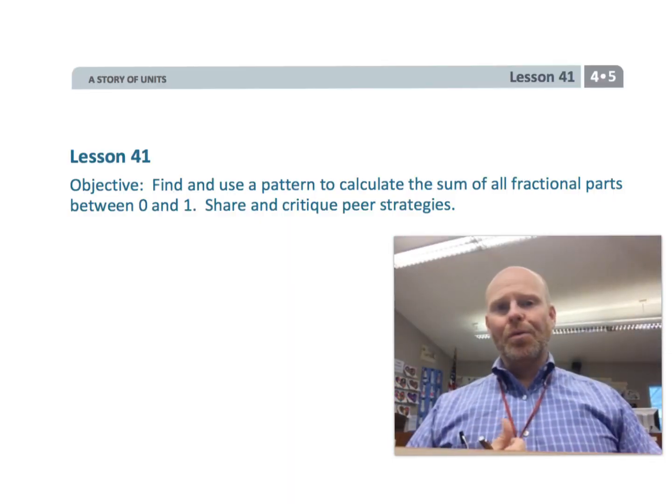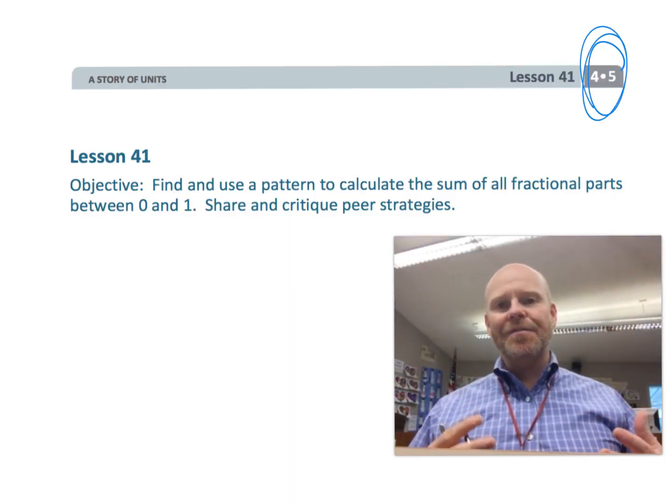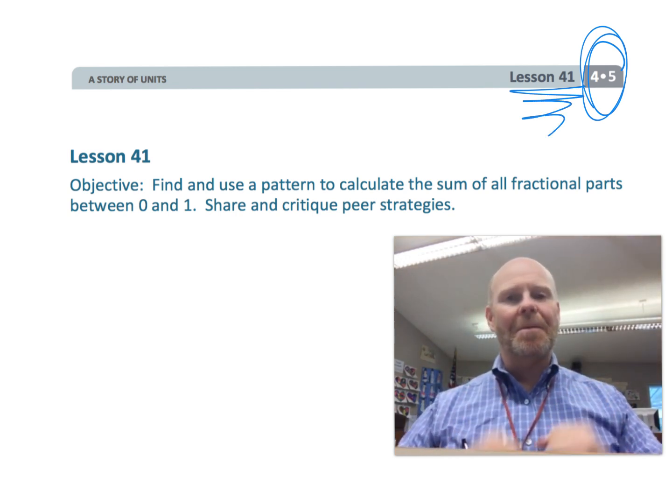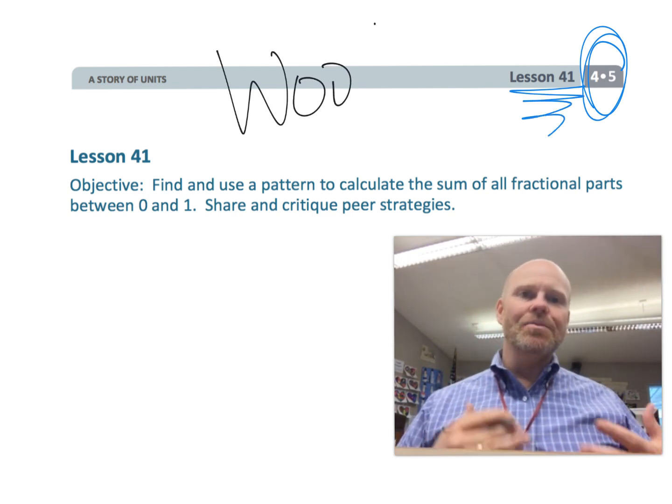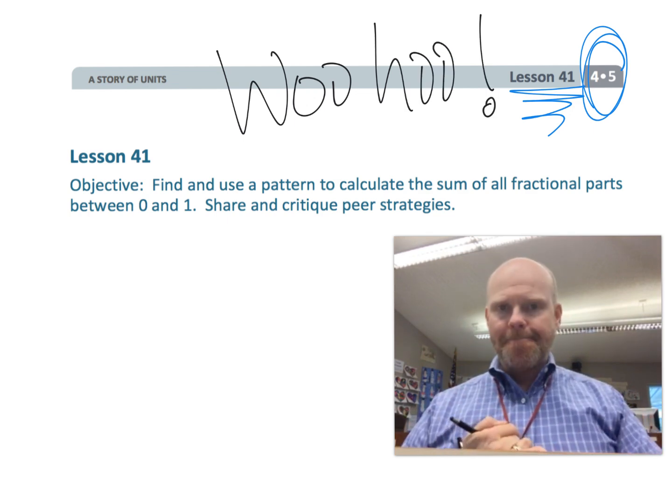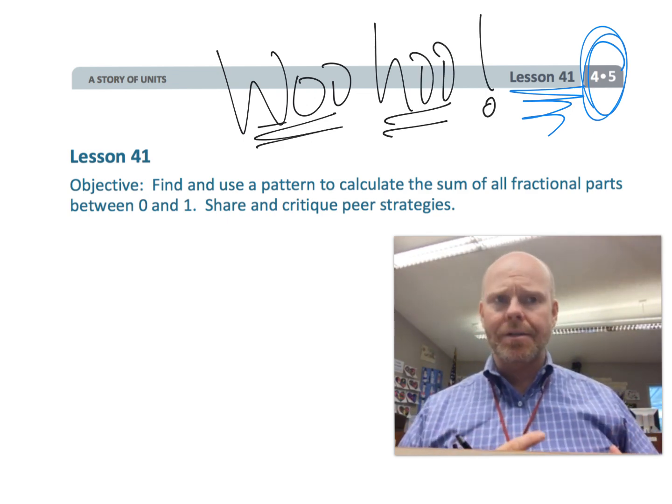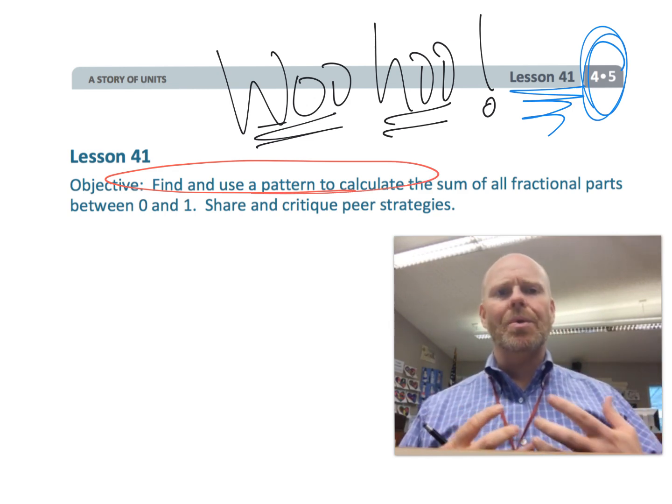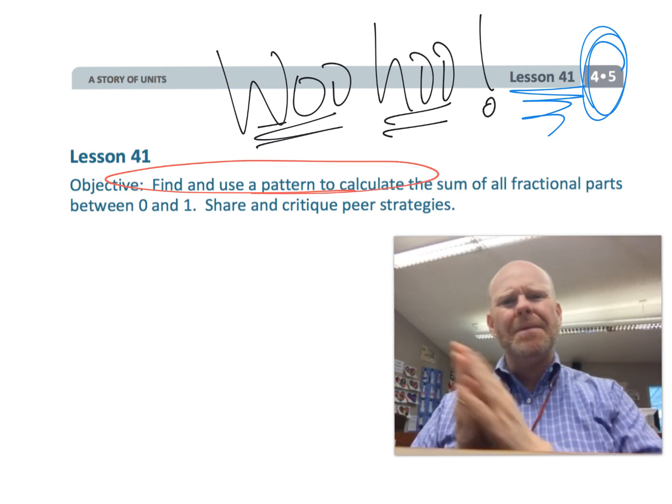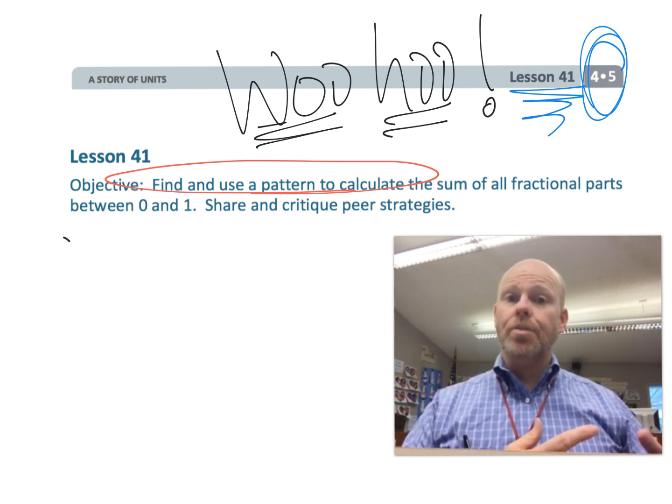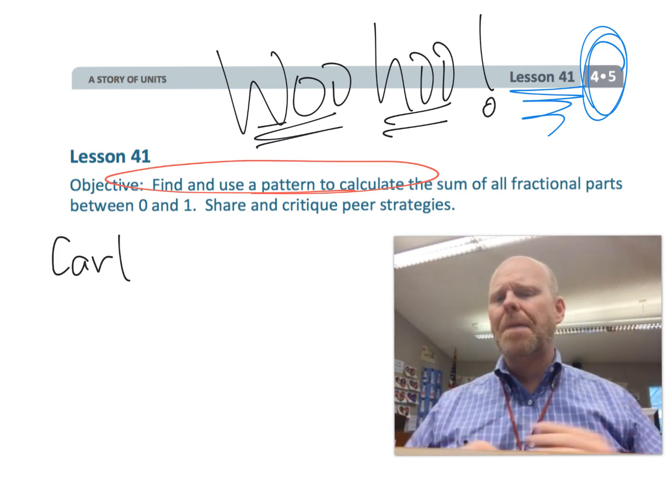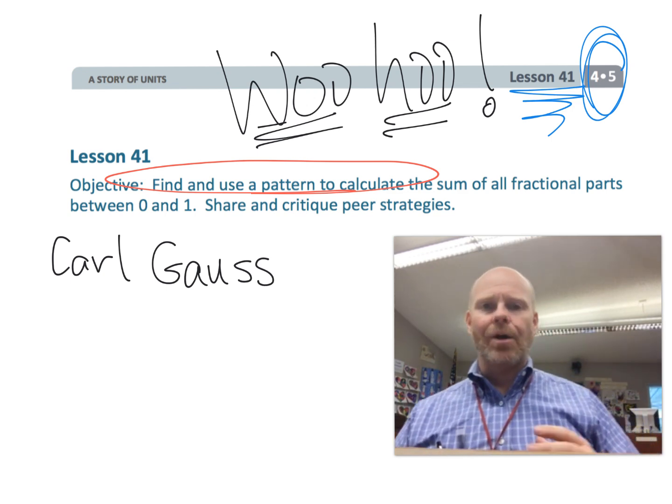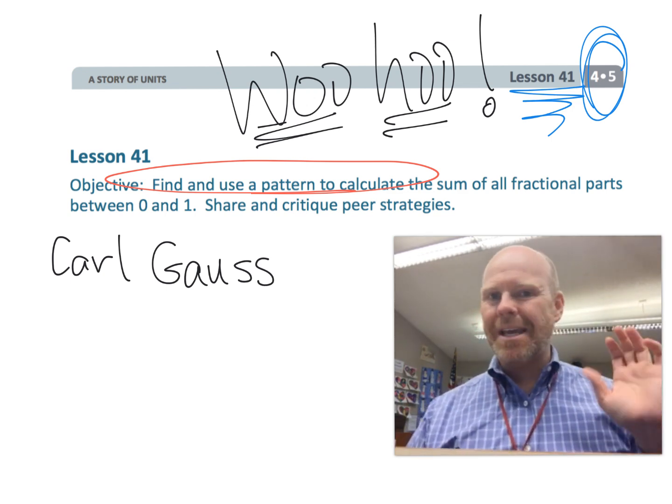All right, this is fourth grade, module five, lesson 41, the last lesson in this very long module. In this lesson, students are going to be finding and using patterns to calculate the sum of all the fractional parts between zero and one. Basically, this is a really famous problem. Oftentimes, it's attributed to Carl Friedrich Gauss. Back in the olden days, the very famous story about Gauss, G-A-U-S-S, man, look it up.